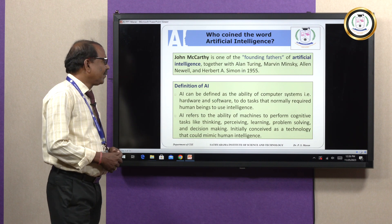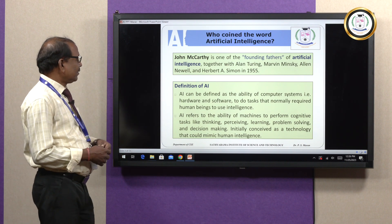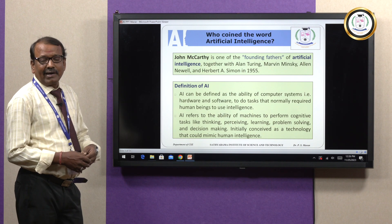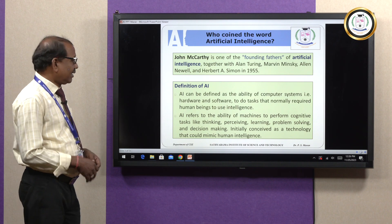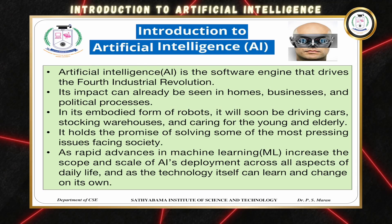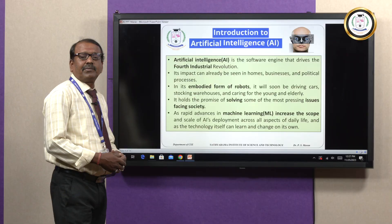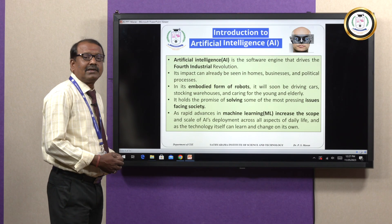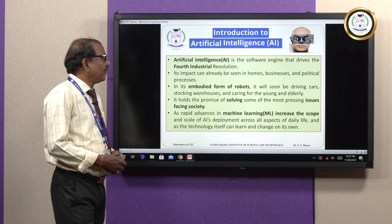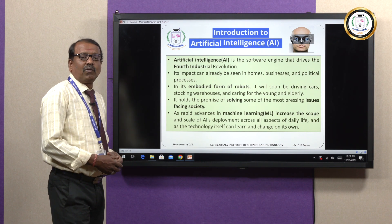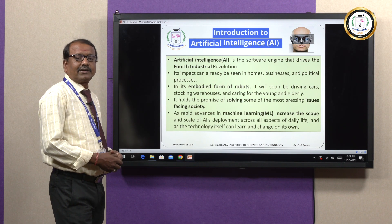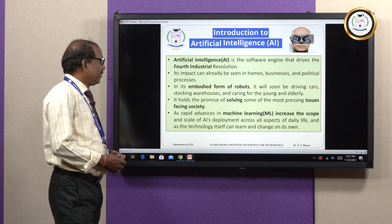Initially we have conceived the technology of mimicking human intelligence. Based on human intelligence only, the machine can execute artificial intelligence. AI is the software engine that derives from the fourth industrial revolution — from Society 4.0 and Industry Revolution 4.0, the AI engine starts. Based on the sustainable development goals, AI should execute all the revolutions.